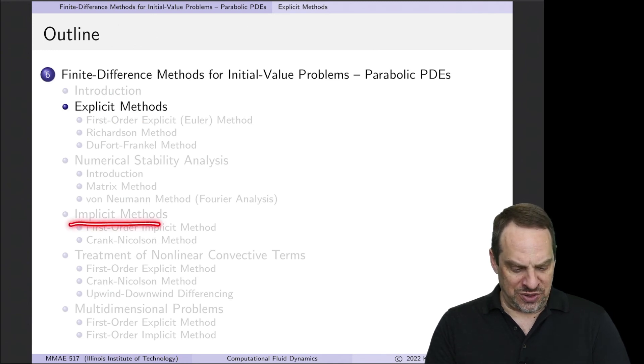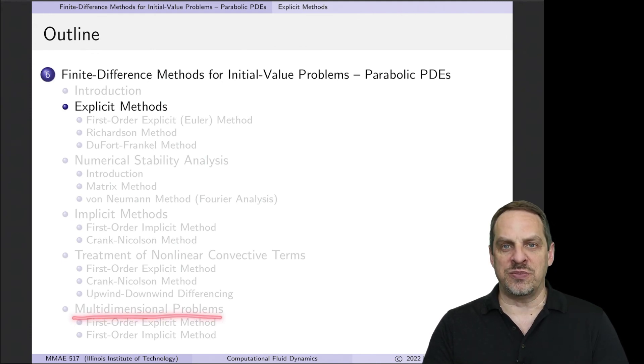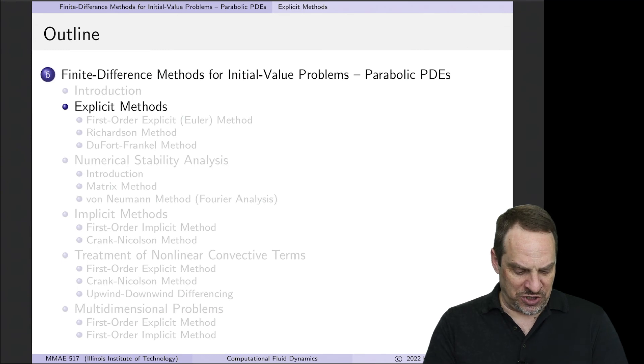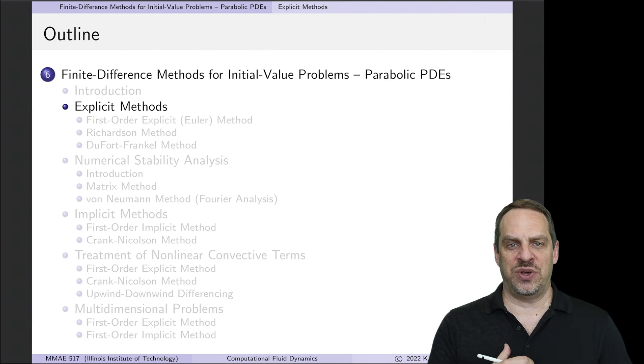Then we'll move on to implicit methods, which address some of the deficiencies of the explicit methods in terms of this numerical stability property. We'll look at multidimensional problems, more than one spatial dimension, and as we did for elliptic equations, we'll also look at nonlinear convective terms and how they can be dealt with within the context of these marching methods.